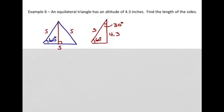So we just need to solve for S and I can do that by saying that the sine of 60 degrees is equal to 4.3 over S. So sine of 60 is opposite over hypotenuse and that's 4.3 over S.